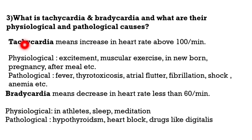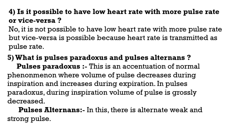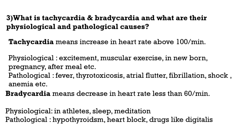Question number 3: What is tachycardia and bradycardia, and what are their physiological and pathological causes? Tachycardia means an increase in heart rate above 100 per minute. Physiological causes include muscular exercise, newborn status, and pregnancy. Pathological causes include fever, thyrotoxicosis, atrial flutter, fibrillation, shock, and anemia. Bradycardia means a decrease in heart rate to less than 60 per minute. Physiological causes include athletics, sleep, and meditation. Pathological causes include hypothyroidism, heart block, and digitalis toxicity.